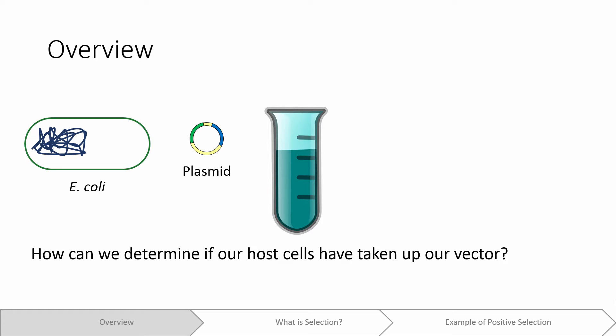In this example, we'll try to transform our host E. coli cells with a plasmid. The method that we'll use to introduce our plasmid into our host cells, usually transformation, is not 100% efficient, so not all of our cells will take up our plasmid.